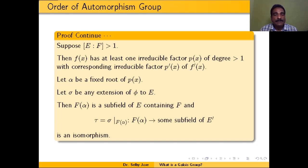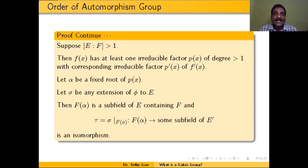Let α be a fixed root of P(x) — from this point on, α is fixed for the rest of the proof. Let σ be an extension of φ to E, so σ is an isomorphism from E to E' with σ restricted to F equal to φ. Since α is in E, F(α) is a subfield of E containing F. We can restrict σ to F(α); call this restriction τ. Then τ is an isomorphism from F(α) to some subfield of E'.